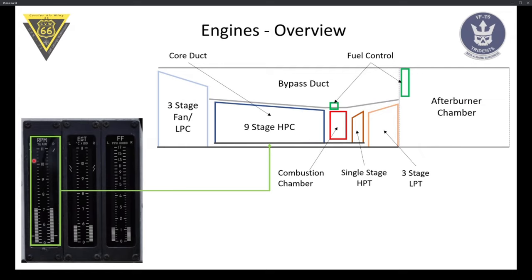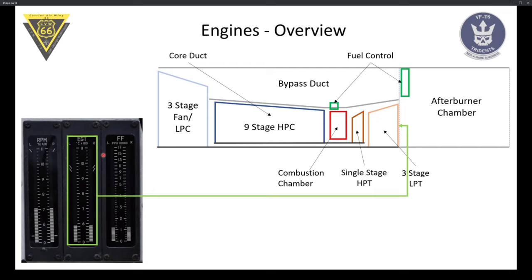Let's look at the engine indications in the Tomcat. We have the engine instrument group, and on the far left we have the RPM. This shows the RPM for the core engine — not the fan — because this is the more critical value. The HPC and HPT spin at a higher RPM than the LPC, so we want to monitor and not exceed the RPM. The limit is 107%, denoted by the limit line. RPM correlates with more thrust. Next is exhaust gas temperature, measured just behind the LPT.